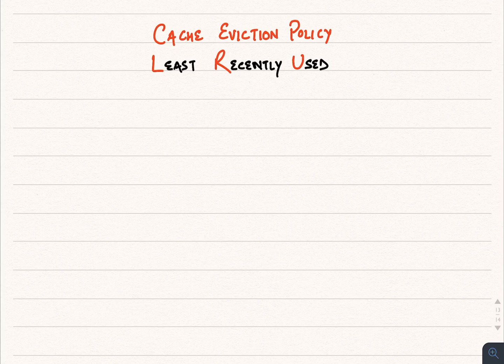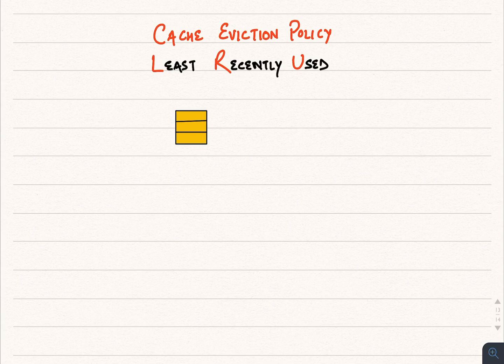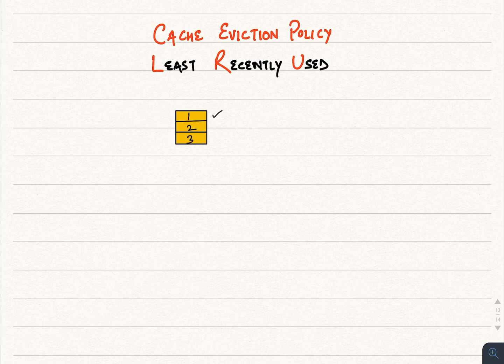So if cache is full and we need to remove old pages, which one should we choose? For example, we have a cache with capacity 3 to store at most 3 pages, and it is empty initially. Let's say CPU requires page 1 — it didn't find it in cache, so it will search in RAM or hard disk and put it in cache. After this, CPU needs page 2 and 3, and it'll do the same. Now we can see that page 1 is the least recently accessed and page 3 is the most recent.